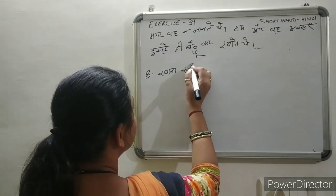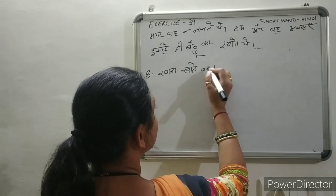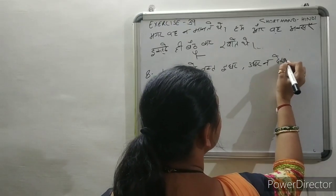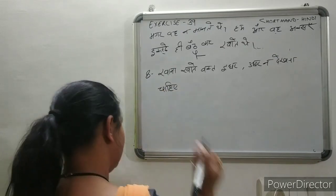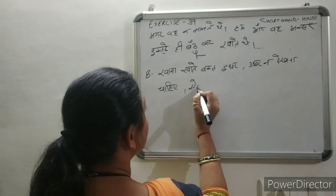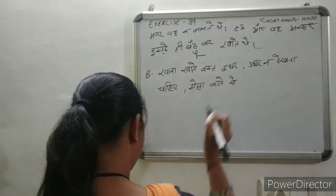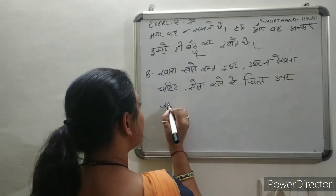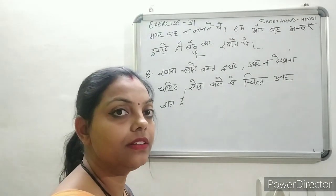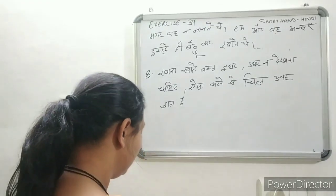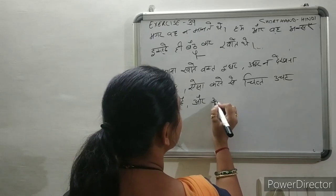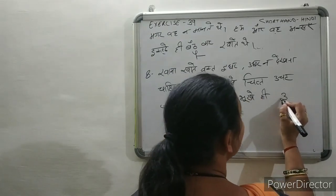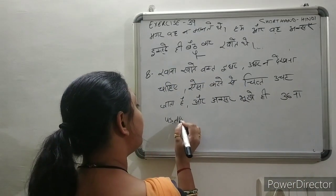The sentences continue: 'खाना खाते वक्त इधर-उधर नहीं देखना चाहिए' (While eating, one should not look here and there). 'ऐसा करने से चित्त उचट जाता है' (Doing so disturbs the mind). Note that in some books this sentence is slightly misprinted, so tally it carefully. 'अक्सर भूखे ही उठना पड़ता है' (Often one has to get up hungry).